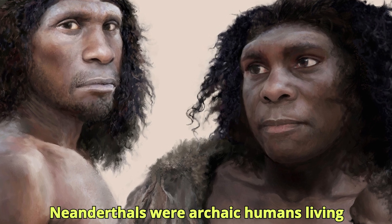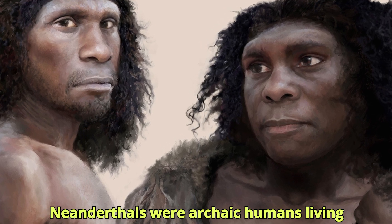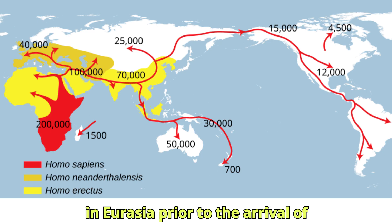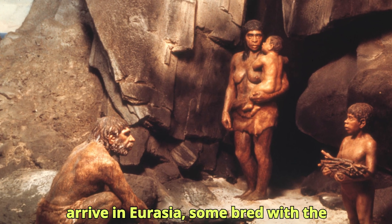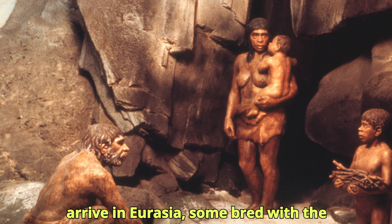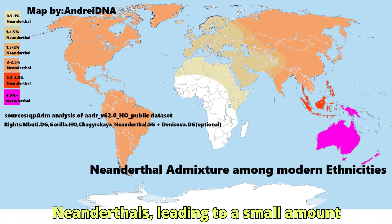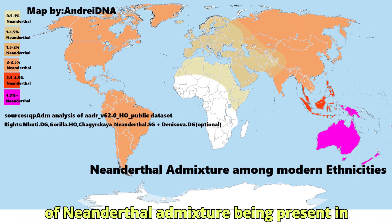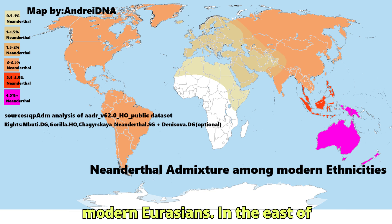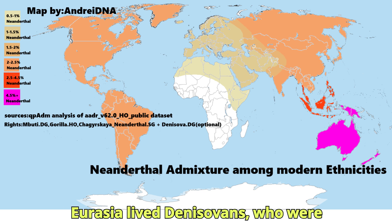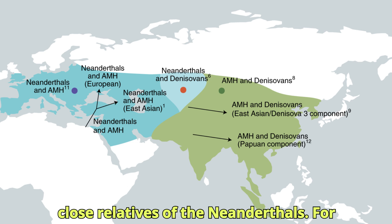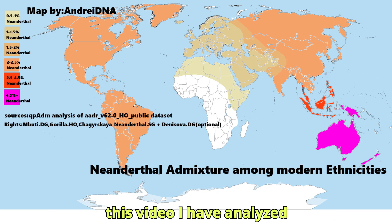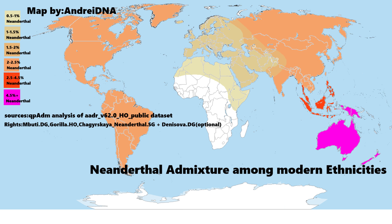Neanderthals were archaic humans living in Eurasia prior to the arrival of Homo sapiens. When Homo sapiens did arrive in Eurasia, some bred with the Neanderthals, leading to a small amount of Neanderthal admixture being present in modern Eurasians. In the east of Eurasia lived Denisovans, who were close relatives of the Neanderthals.